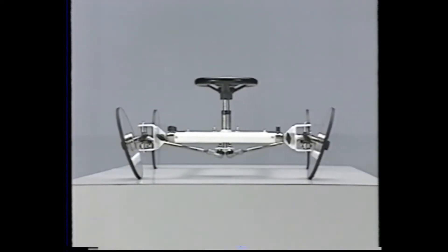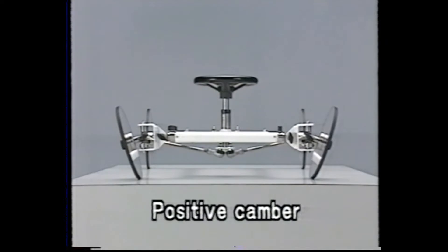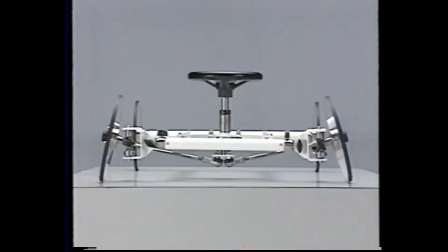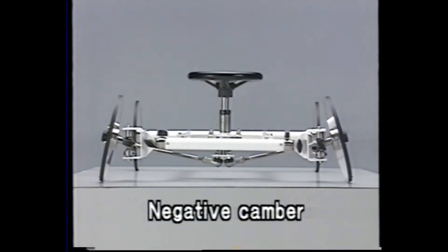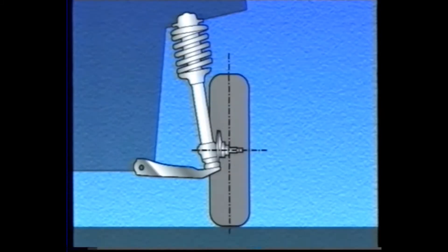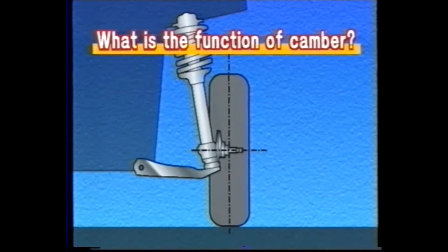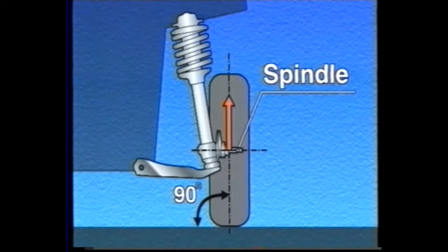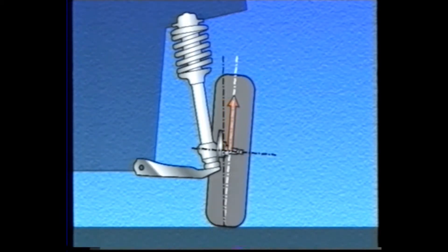When the top of the wheel is tilted outward, it is called positive camber. When it tilts inward, it is called negative camber. When the camber is zero, the load on the spindle is applied at the tire center line to the point where the spindle intersects.